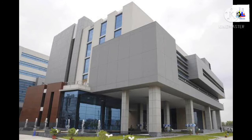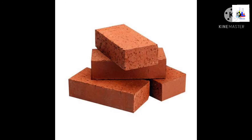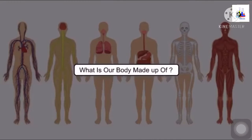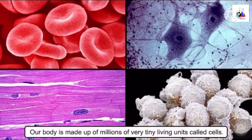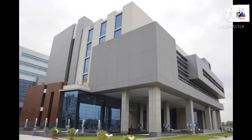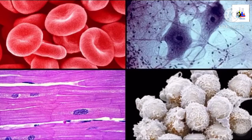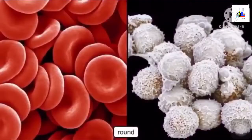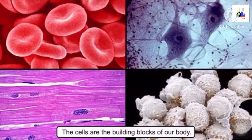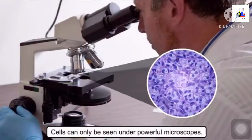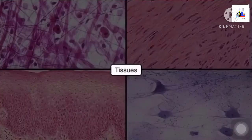You also know that these buildings are made up of many bricks. So students, can you tell me what is our body made up of? The answer is cells. Our body is made up of millions of very tiny, small living units called cells, just like a building is made up of bricks. There are different types of cells — some cells are flat, some are round in shape, and some are long and thin. Cells are the building blocks of our body and they can only be seen under powerful microscopes.